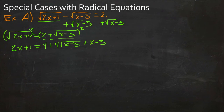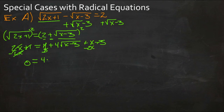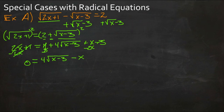Now we'll combine like terms. We have a positive 1 on the left, so we subtract it from both sides, making the constant on the right a 3. The positive 3 and negative 3 cancel out. Then we have 2x on the left, so we subtract the 2x's from both sides — subtracting 2x from 1x on the right gives negative 1x. That leaves us with nothing on the left and 4 roots of x minus 3 minus x on the right.